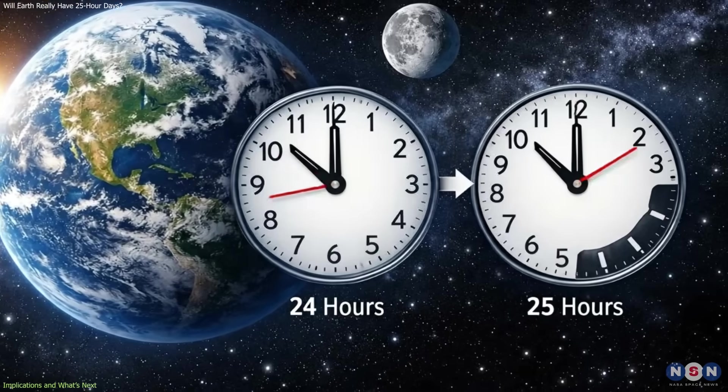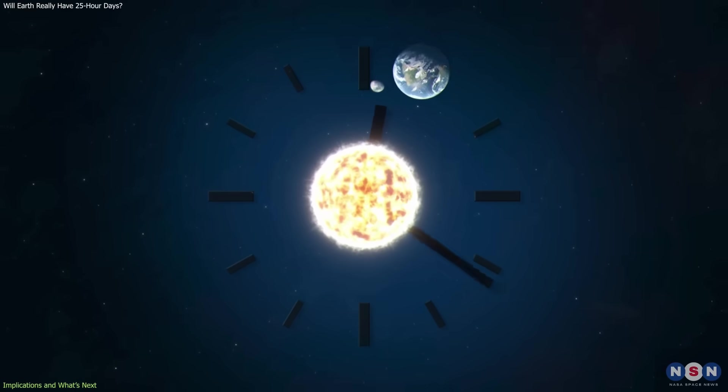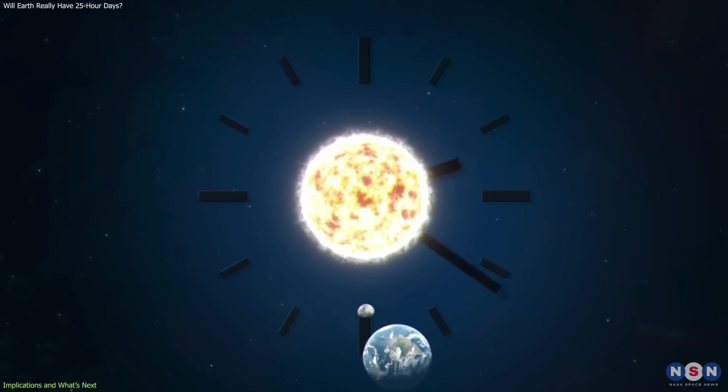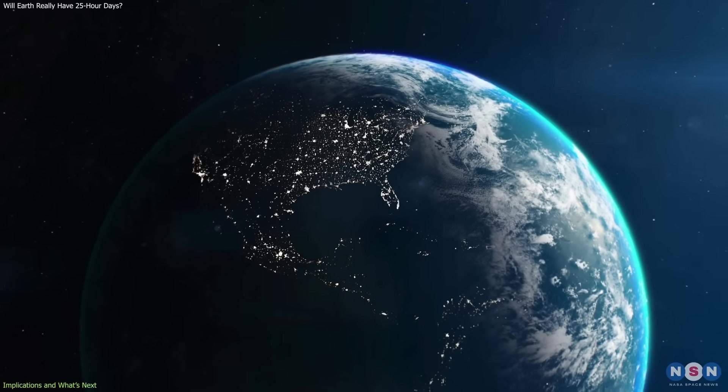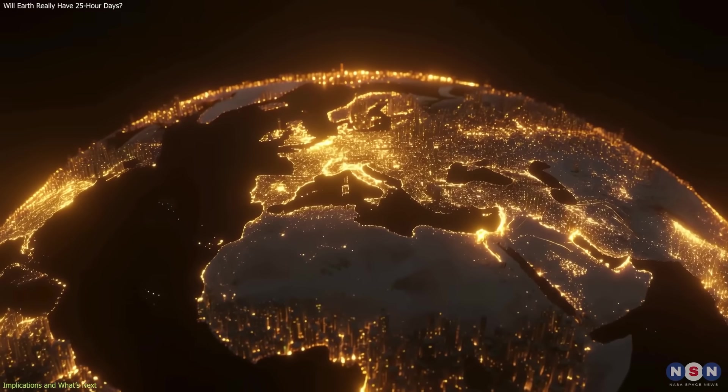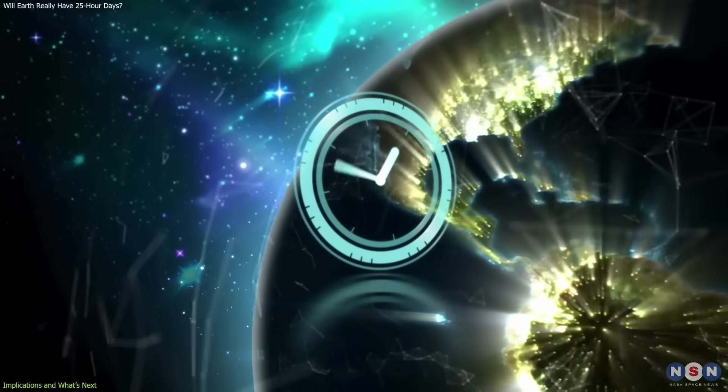The question most often asked is whether Earth will eventually experience 25-hour days. Based on current models of the Earth-Moon system, this would take on the order of 200 million years. This timescale places the idea firmly outside any context relevant to human civilization, biology, or technology. In the present day, the implications are limited to fields that rely on precise timekeeping.